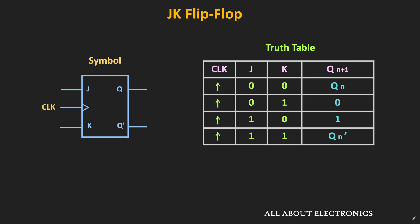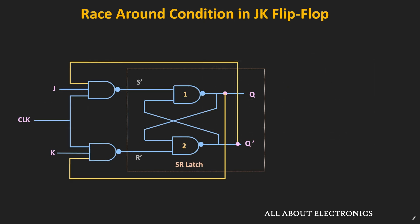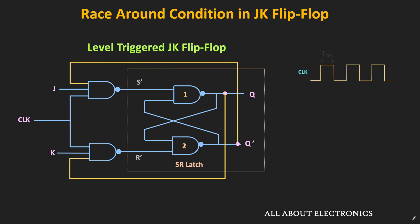In the earlier video, we have already learned about the JK Flip Flop and discussed the race-around condition. We have seen that if the JK Flip Flop is level triggered, and the on-time of the clock is much more than the propagation delay of this flip flop, then due to feedback from the output to the input side, the output will toggle continuously.